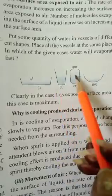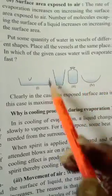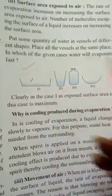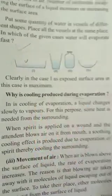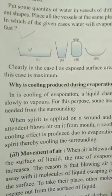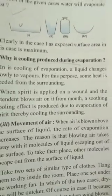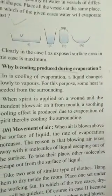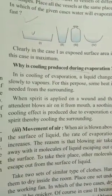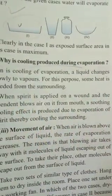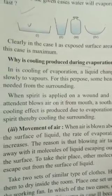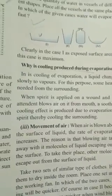If the surface area is more, the water will evaporate faster. This is why cooling is produced during evaporation — when liquid converts to vapor, it takes heat from the surroundings, making the surroundings cooler. This also happens in earthen pots, where water evaporates through the pores and the water inside becomes cold.